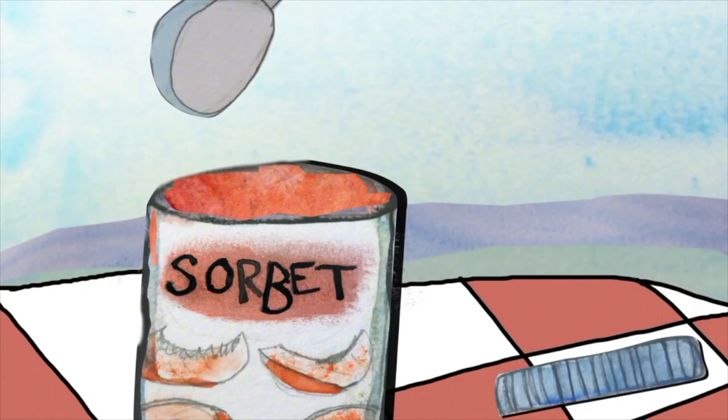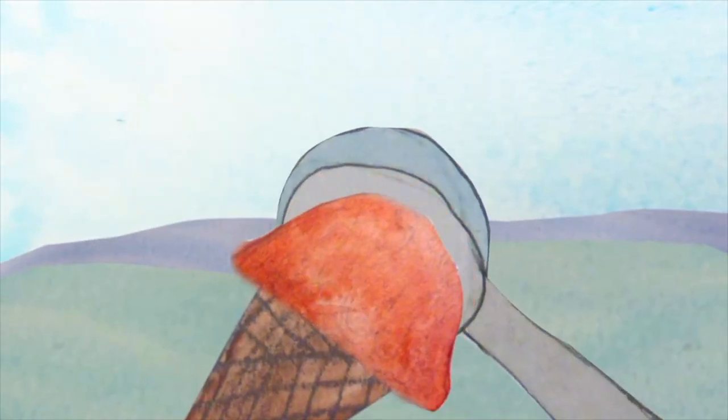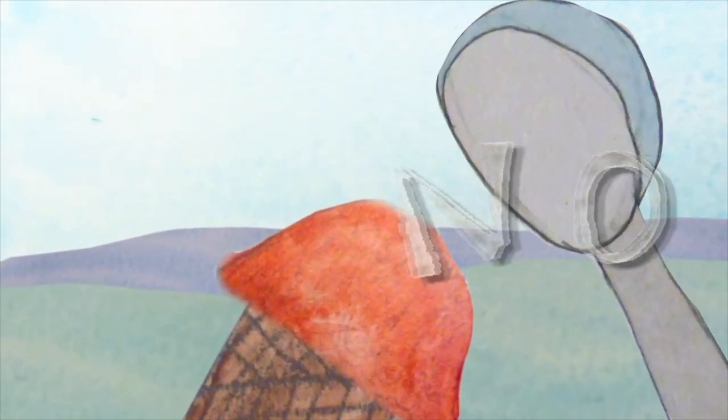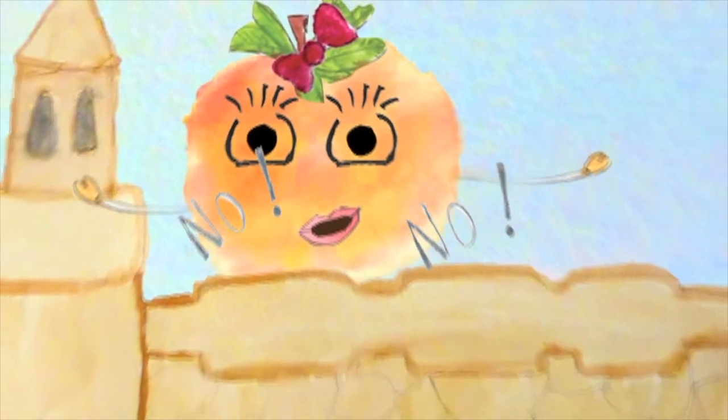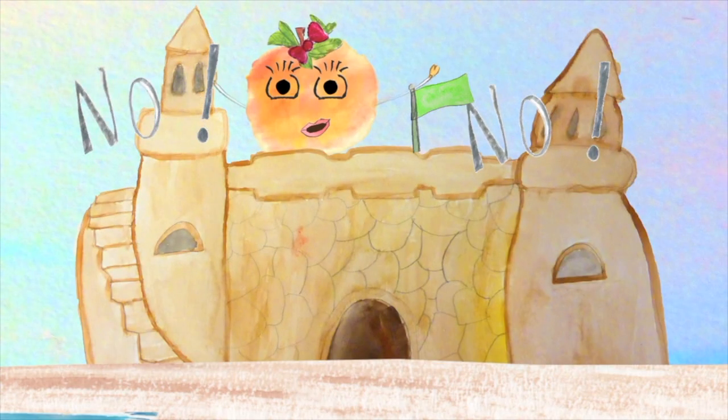Hello, said Mr. Spoon, I would like to scoop you up and make some peach sorbet. No, no, no, said Peach, I'd like to stay at the beach and make sandcastles all day.